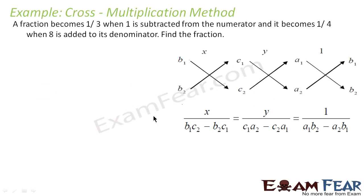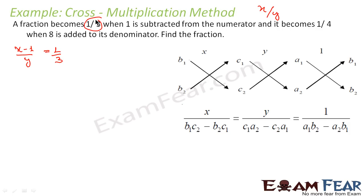A fraction becomes 1 by 3 when 1 is subtracted from the numerator, and becomes 1 by 4 when 8 is added to its denominator. Find the fraction. Let's assume the fraction to be x by y, where x is the numerator and y is the denominator. When 1 is subtracted from the numerator, that is (x minus 1) by y, this becomes 1 by 3. And when 8 is added to the denominator, x by (y plus 8) becomes 1 by 4.